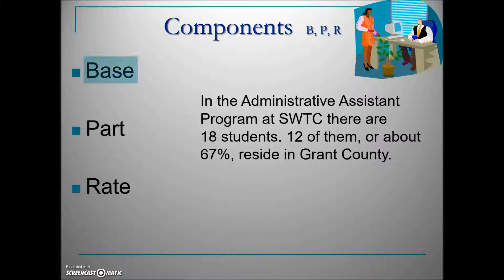Looking at this information, the base is the total quantity, which corresponds with the 18 students—the total number in this program. The part is a portion of the total amount, which is 12 of these students. The rate is always easiest to find; it's the percentage. Clearly, 67% is the rate in this problem.